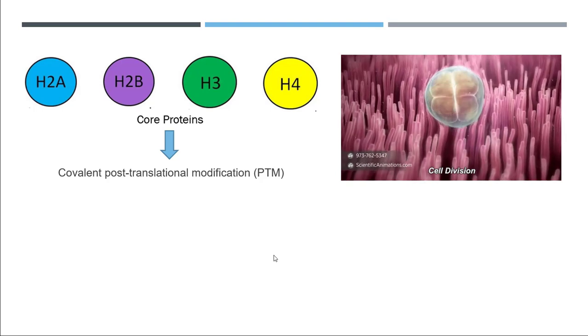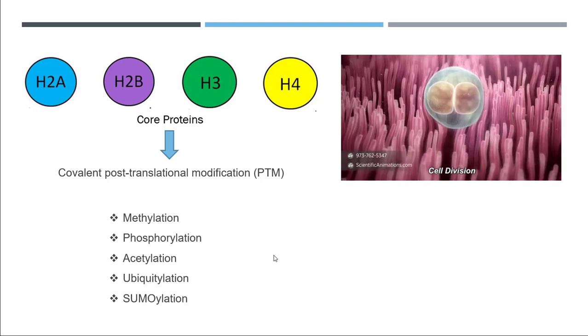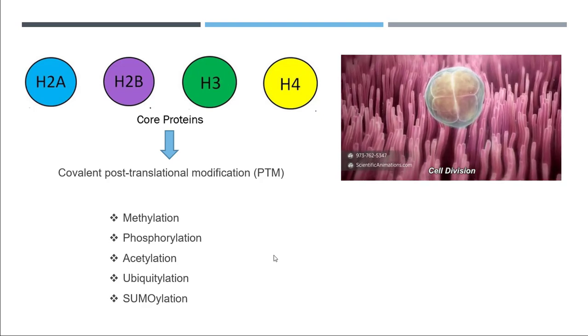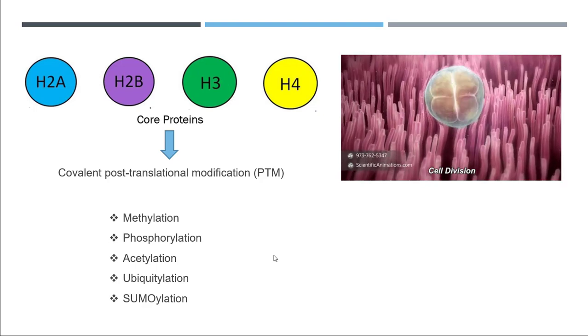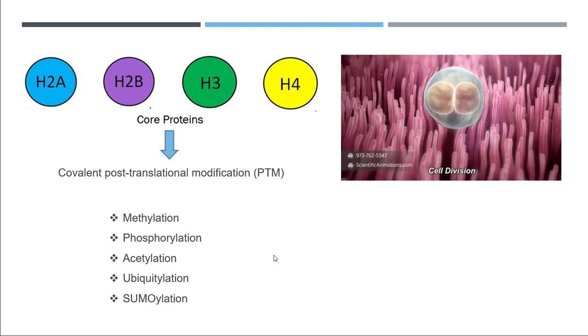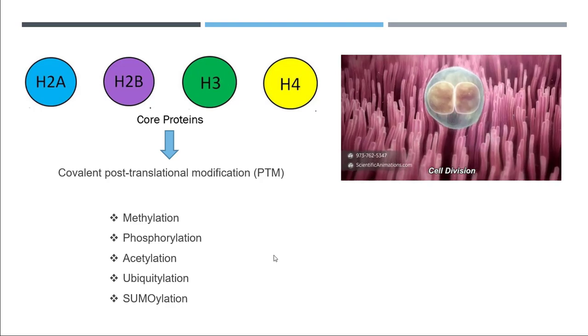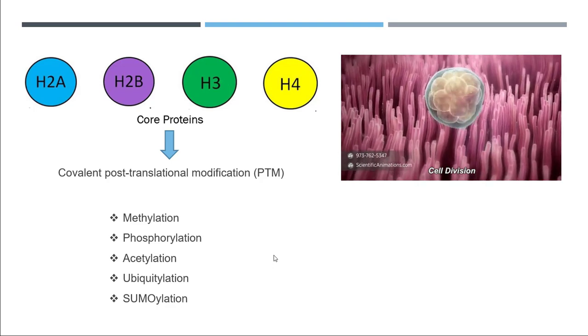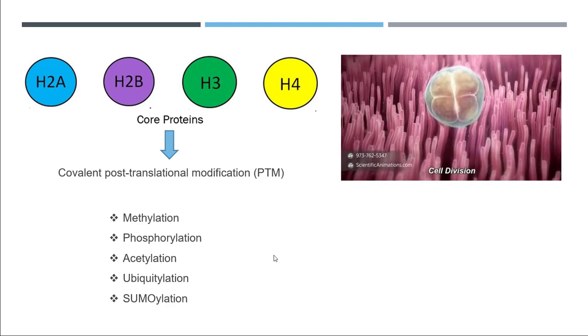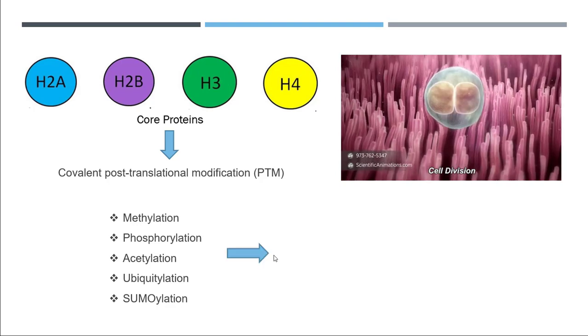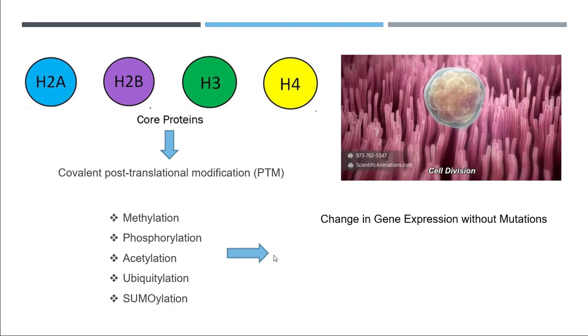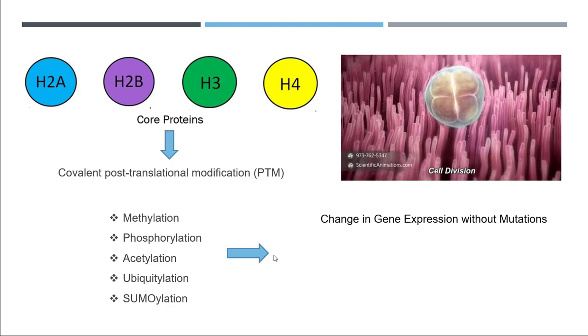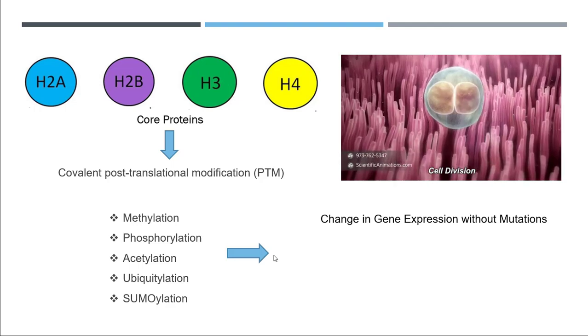What kind of post-translational modifications are there on histone proteins? They can be methylation, phosphorylation, acetylation, ubiquitination, and SUMOylation. With these PTMs, core proteins can make changes in gene expression without making any changes in the nucleotides.